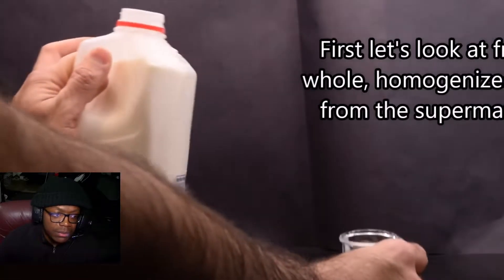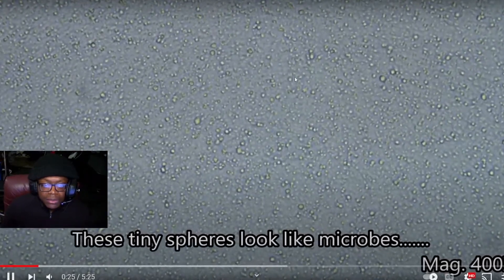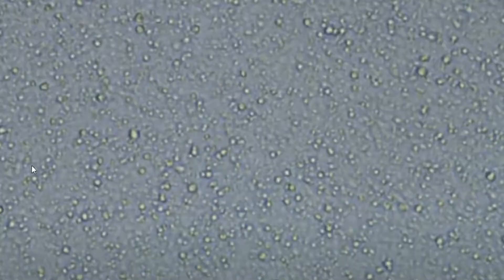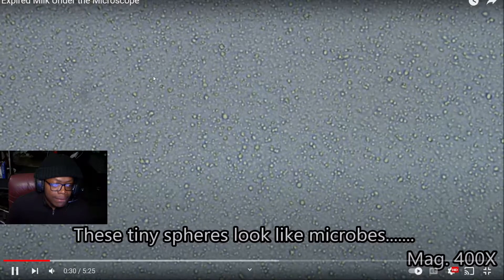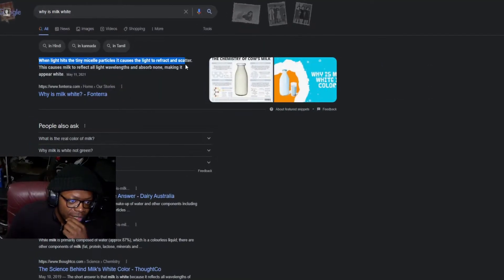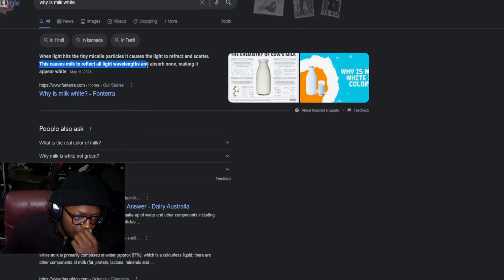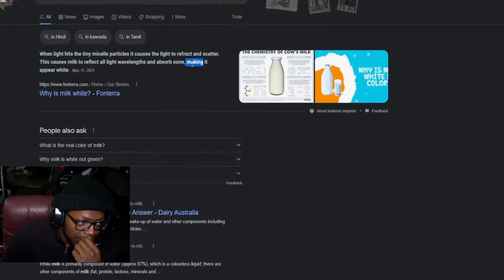This is ordinary milk under a microscope. These tiny spheres look like microbes. Where does it get its white color from? When light hits the tiny micelle particles, it causes the light to refract and scatter. This causes milk to reflect all light wavelengths and absorb none, making it appear white.